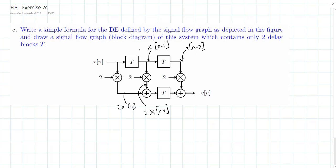And therefore, the signal which adds both this one should have the value of 2 times x[n] plus 2 times x[n-1].